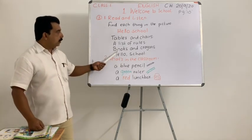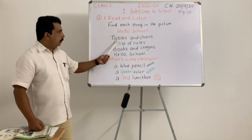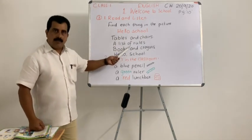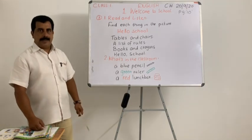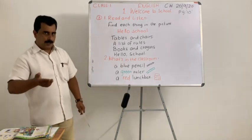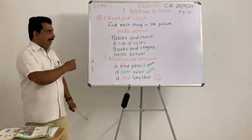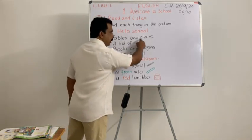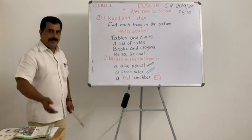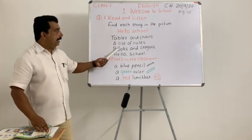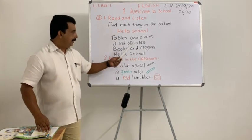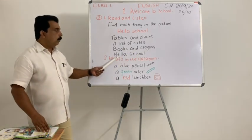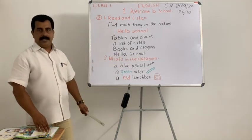You are back at school — you saw tables and chairs, you noticed a list of rules, books and crayons. Who can read? Point your fingers and try: tables and chairs, a list of rules, books and crayons, hello school. Excellent voice!